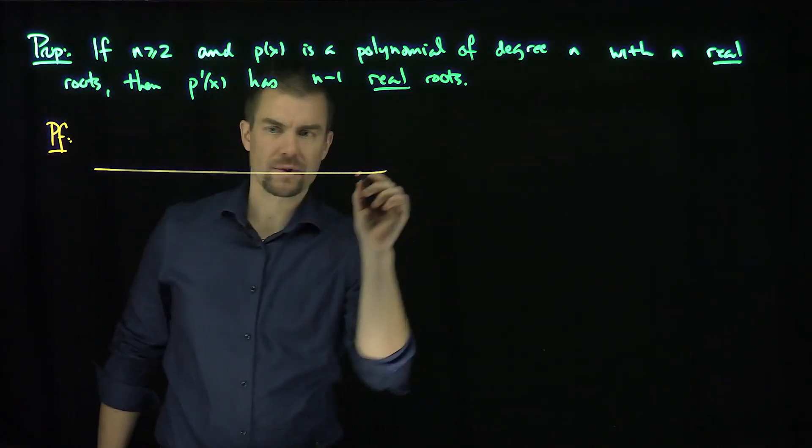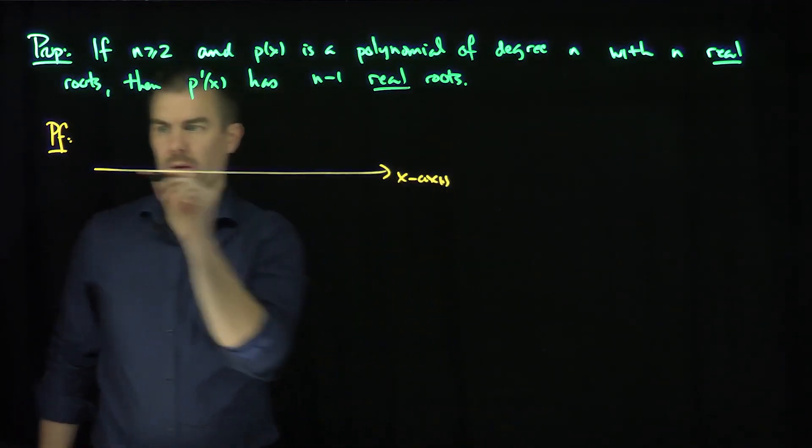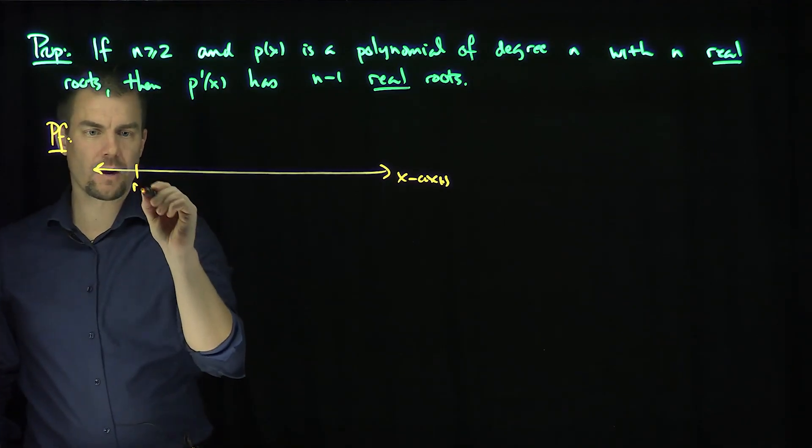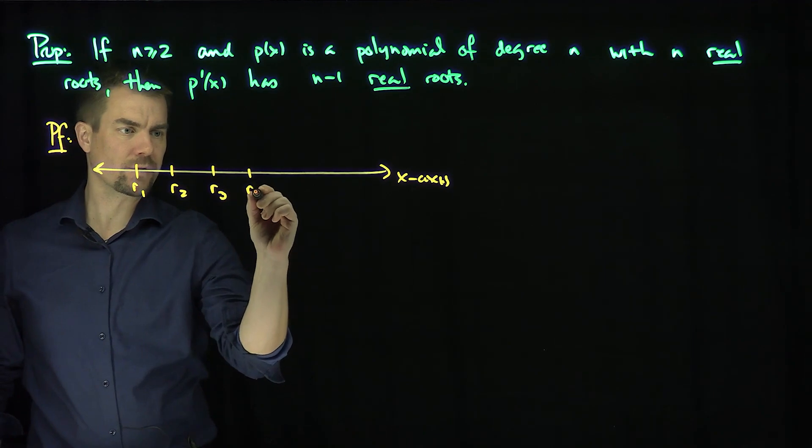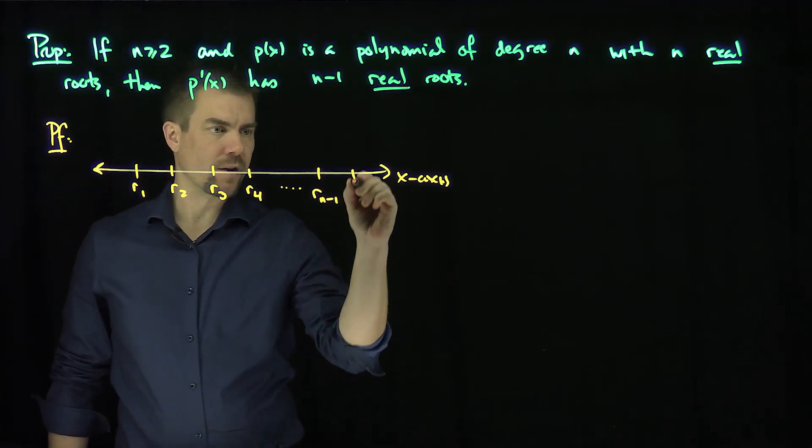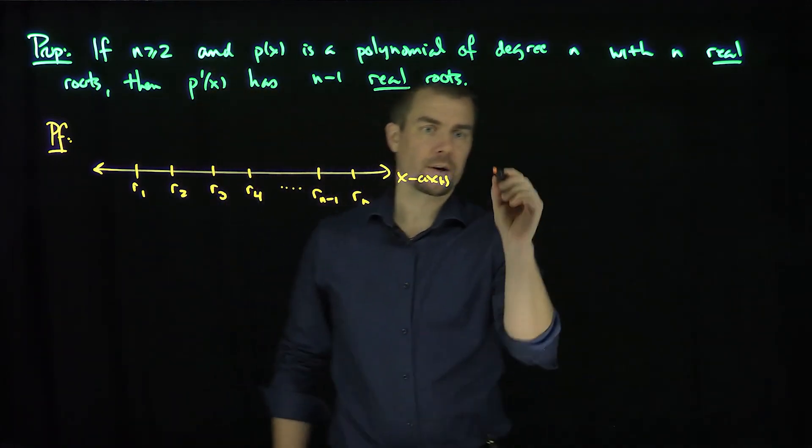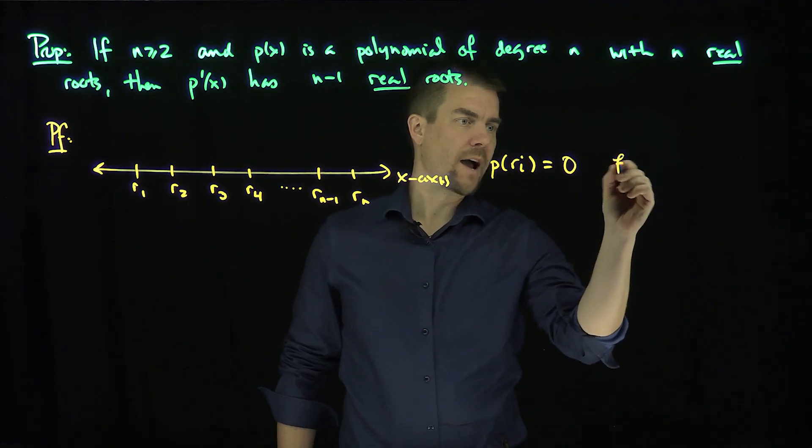Let's pictorially represent like this. Here's the real line, the x-axis. And let's say we have these roots over here: r1, r2 is a root, r3 is a root, r4 is a root, and so on. r(n-1) is a root, and then rn is a root. So those are the roots of my polynomial. So here, p(ri) equals 0 for all i.